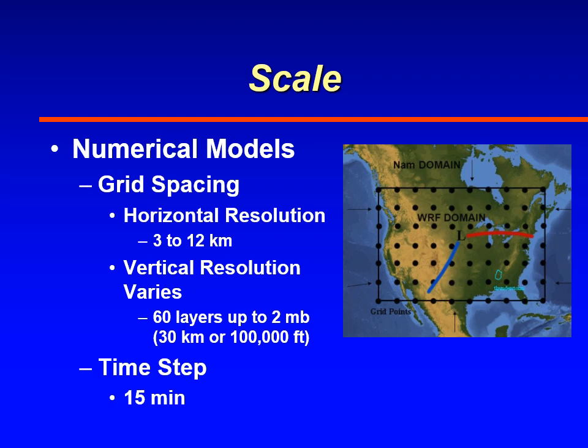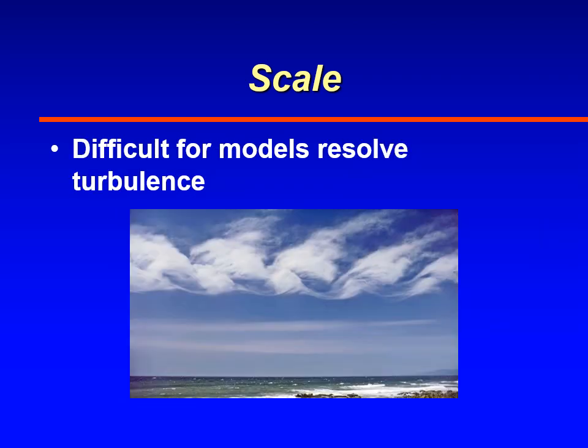Our best computer models have horizontal resolutions of between 3 and 12 kilometers, and vertical resolutions that can be as small as 20 meters in the lowest layers of the atmosphere, but get gradually bigger as you go up through the upper atmosphere. Time steps are on the order of about 15 minutes. This means that the eddies that produce turbulence are on a size and time duration much smaller than what our computer models can forecast, so we can't really resolve turbulence using our computer models.